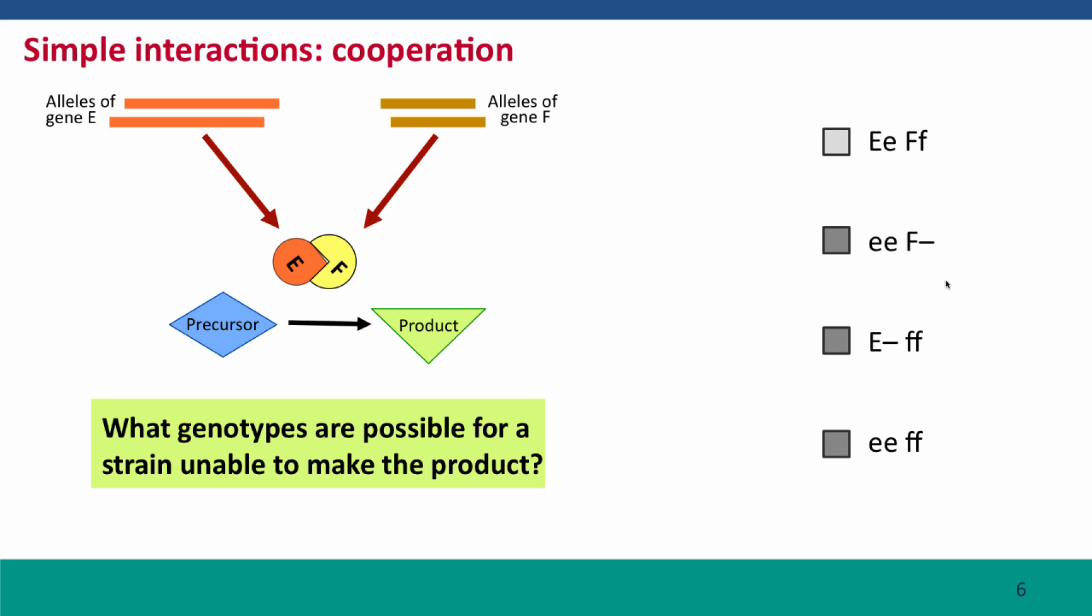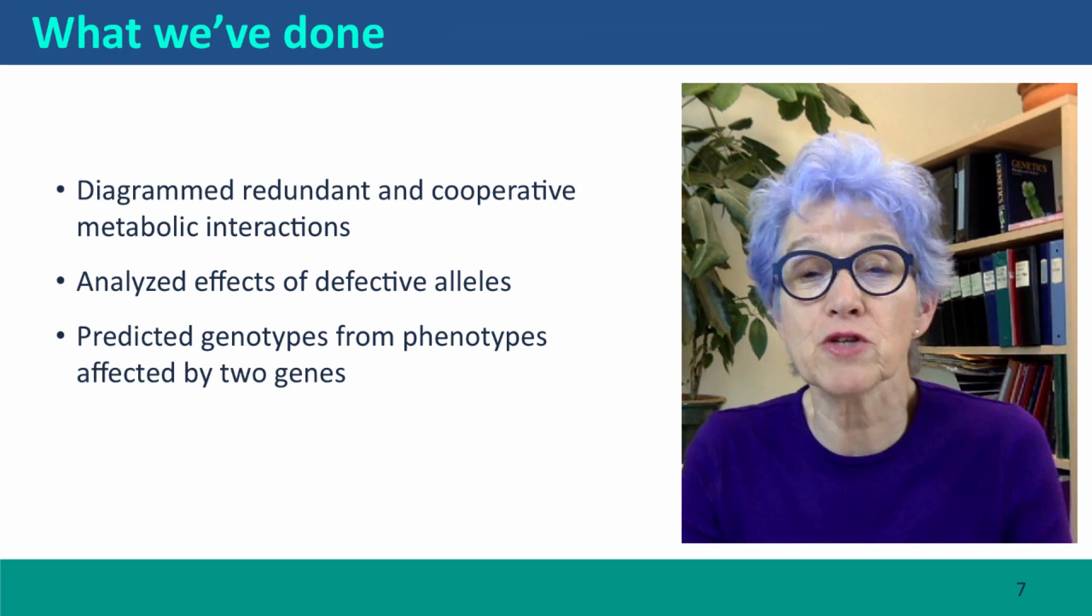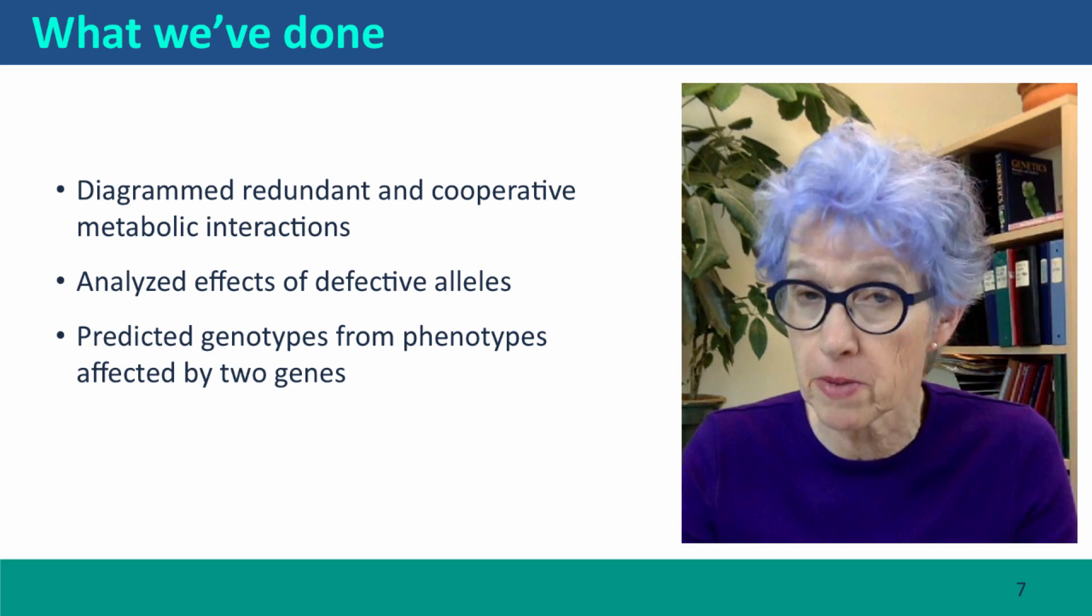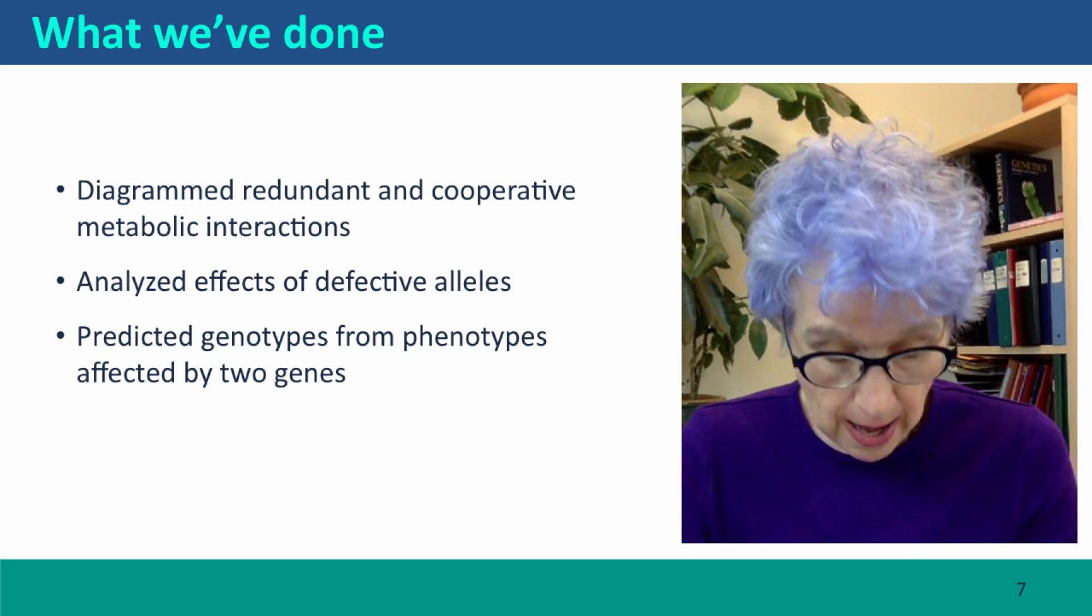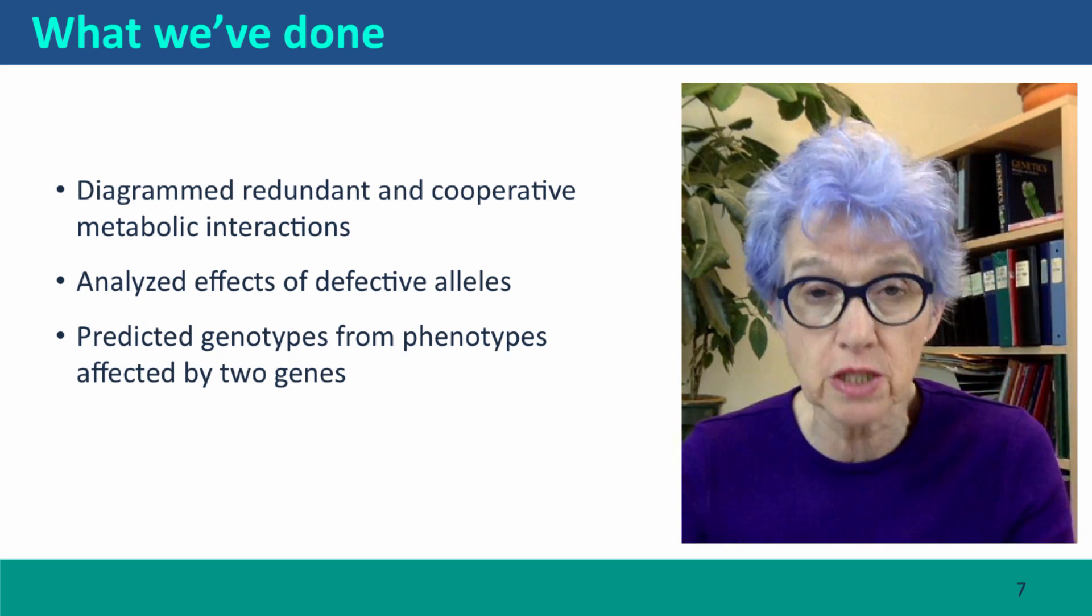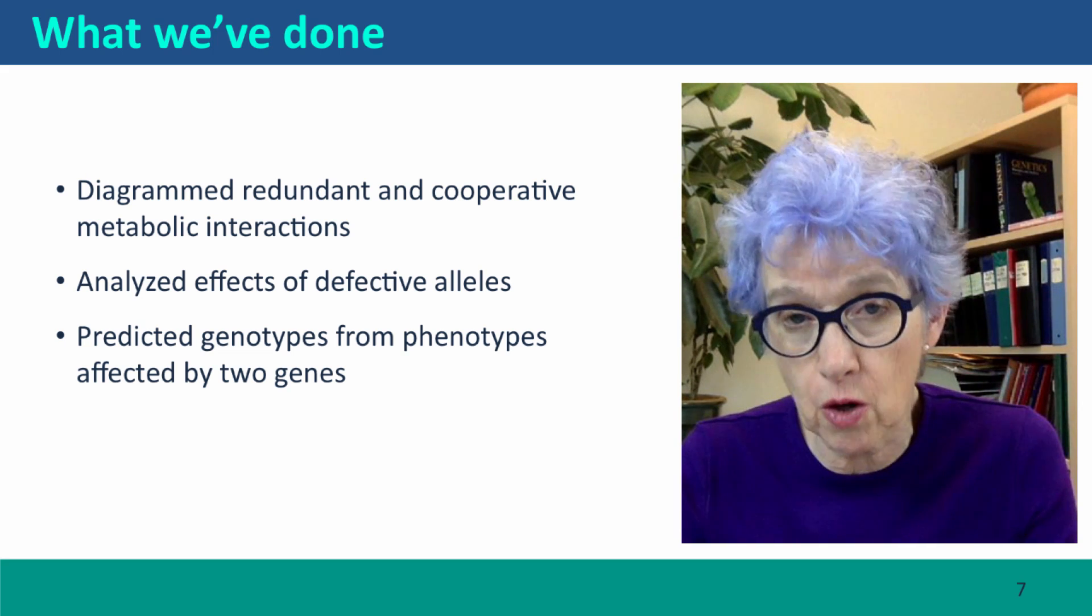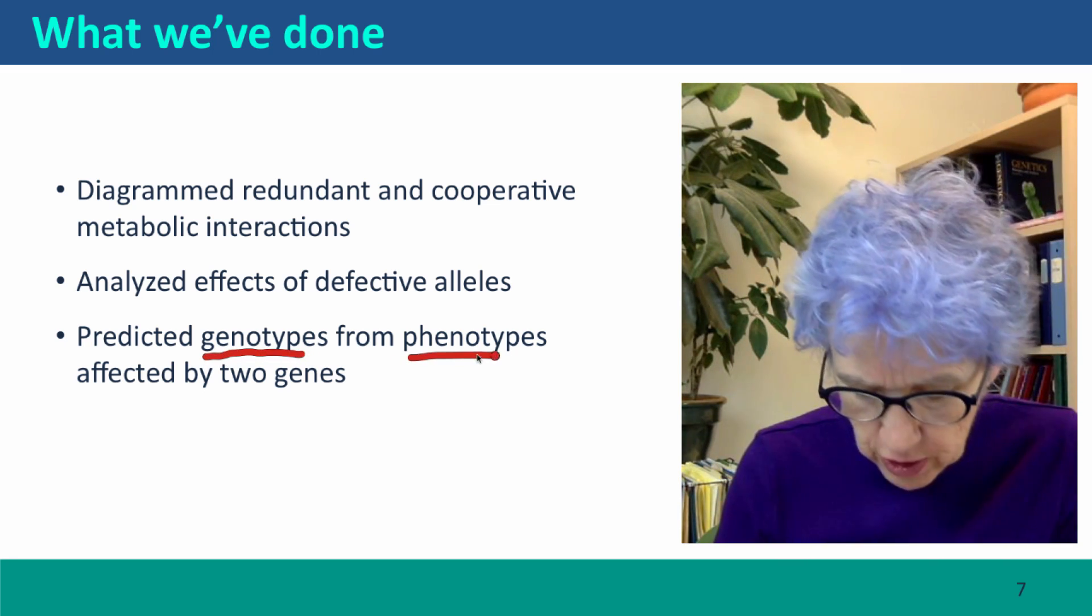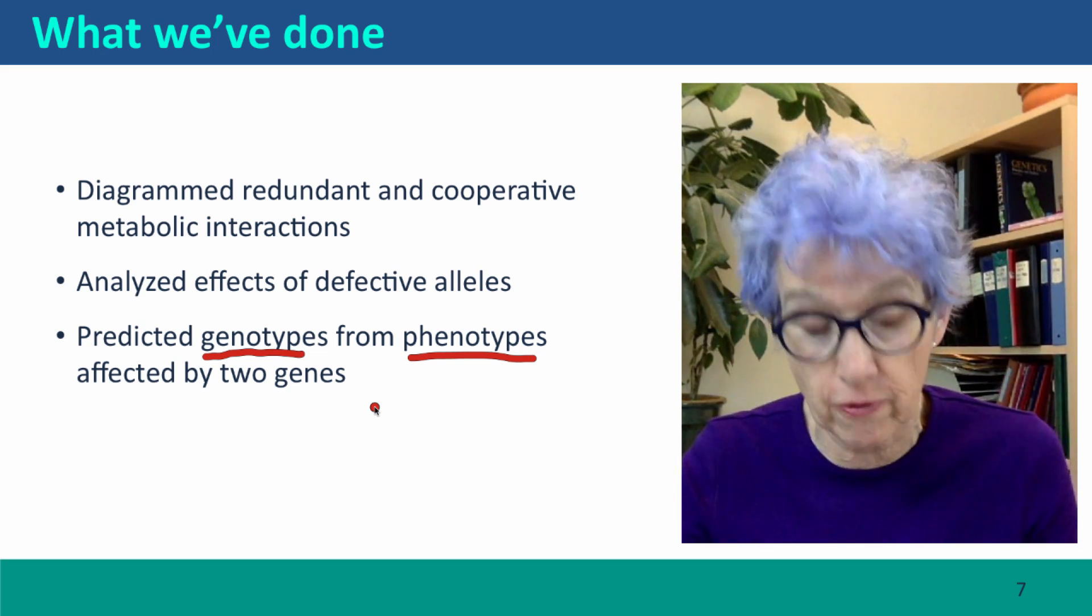So in this case, the masking is going in both directions. A defect in production of protein E masks what's going on at gene F, and a defect in the production of protein F masks what's going on at gene E. So this has been a very short lecture, but we've considered two kinds of gene interactions that are very common in biological systems, including in our own bodies. Situations where one goal is accomplished in two different ways, and situations where the products of two genes have to cooperate to bring about a goal. And we've analyzed the effects of defective alleles, and we've predicted the genotypes from the phenotypes in situations where we know the genetic basis of the phenotype.